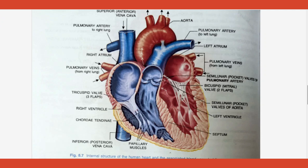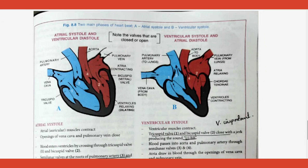Between the atrium and ventricle there is a flap-like structure called a valve. Blood goes from the atrium to the ventricle when the atrium contracts — contraction is called systole. When the atrium squeezes in, its size reduces and all the blood flows into the ventricle.